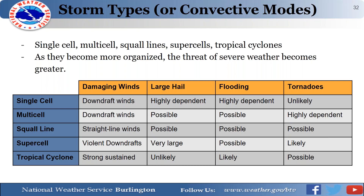There are four different types of convective modes: single cell, multi-cell, squall line, and supercell, plus tropical cyclones as a separate category. At the least organized level is a single cell, then multi-cells with clusters or several pulses of storms, squall lines which are more organized lines typically associated with damaging winds, and the supercell, characterized by its rotation. Generally, as a thunderstorm becomes more organized, the severe weather threat becomes greater.